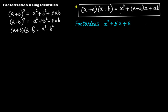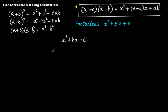How will we do this? In general, if the algebraic expression is x squared plus bx plus c, and you cannot use any of the three previous identities, then you have to take two numbers p and q such that p plus q equals b and p multiplied by q equals c.